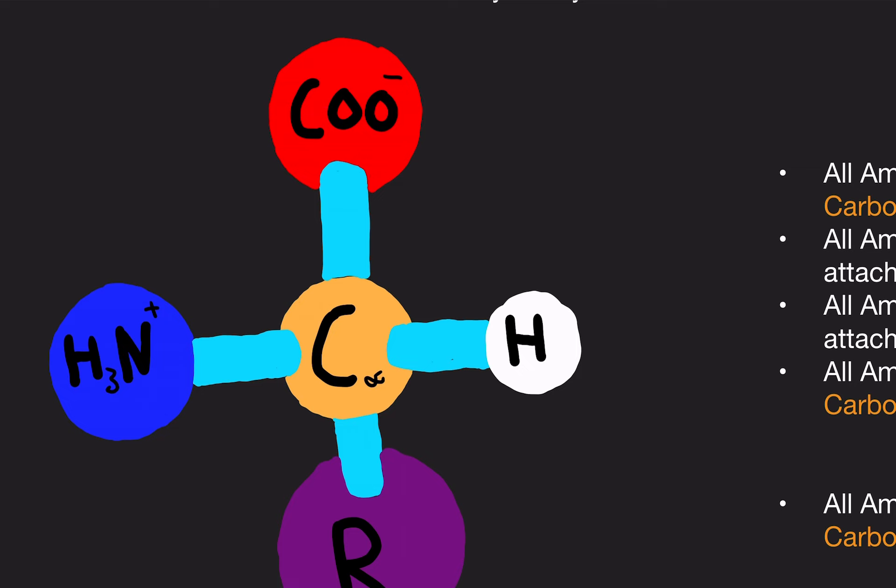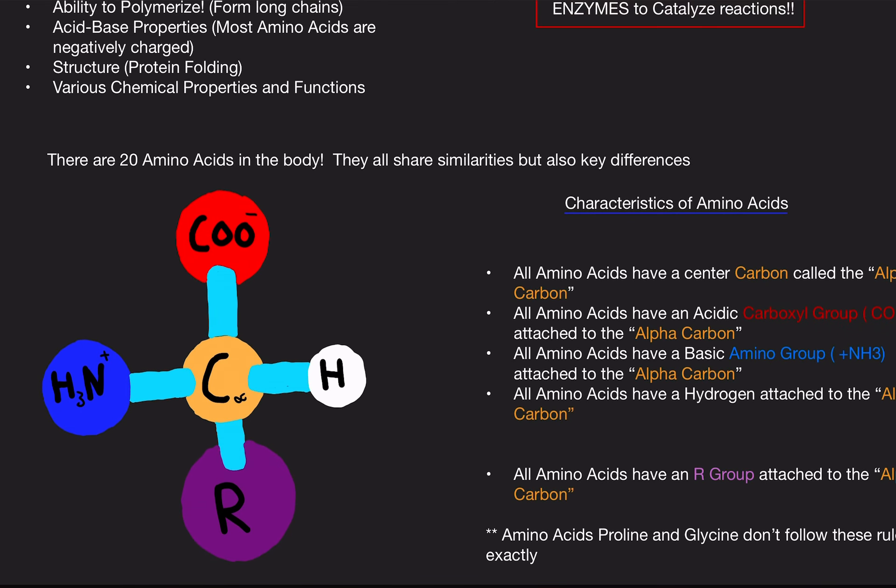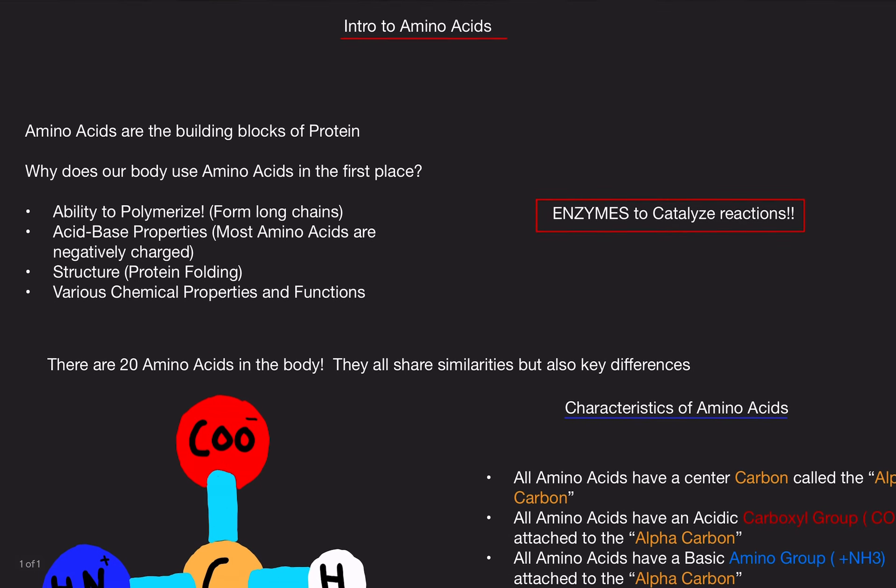Or like, think about like a control center. Let's talk about like a control center. Through the control center, we have a carboxyl group, an amino group, a hydrogen, and an R group.